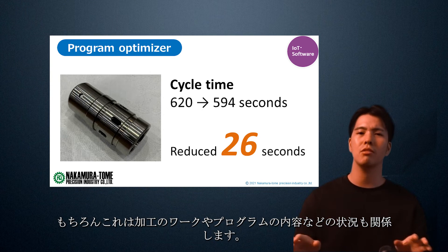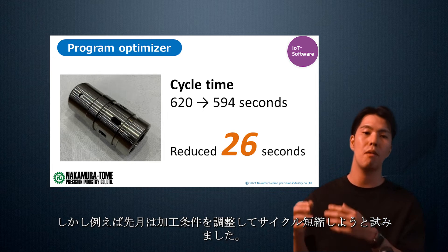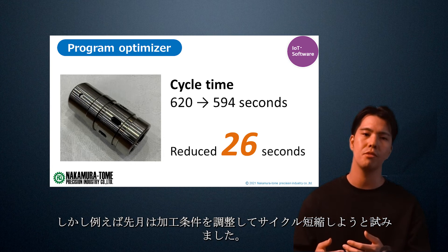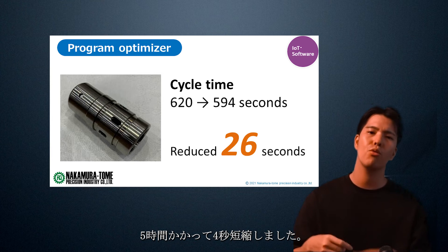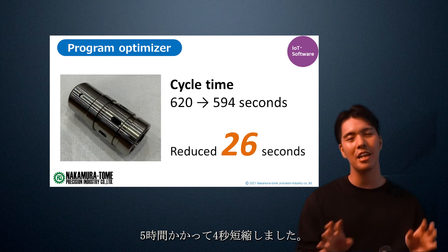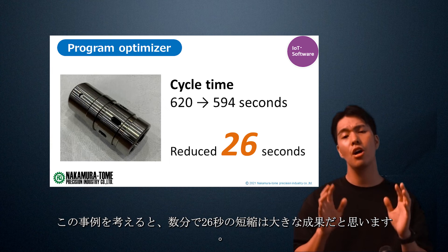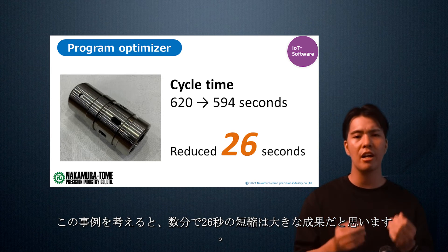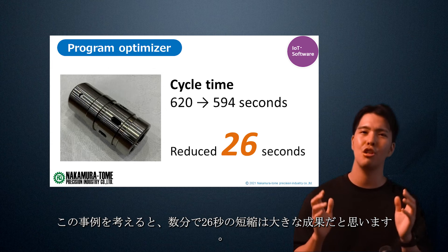But last month, for example, we tried to reduce the cycle time by adjusting the machining conditions. It took 5 hours, but we were only able to reduce the cycle time by 4 seconds. Considering that case, I think a 26-second reduction in just a few minutes is a great achievement.